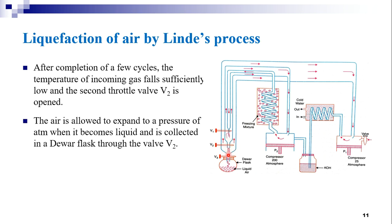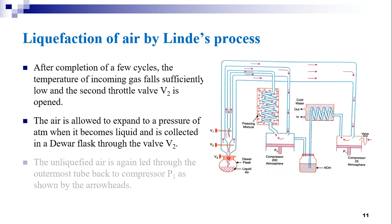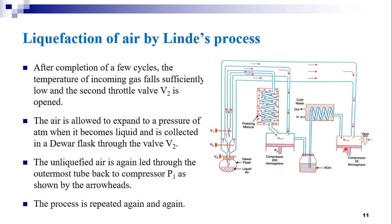The air is allowed to expand to a pressure of 1 atmosphere, at which point it becomes liquid and is collected in a Dewar flask through valve V2. The unliquified air is again led through the outermost tube back to the compressor P1. This process is repeated again and again until the air is completely cooled and liquefied. This is the method of liquefying air by Linde's process.